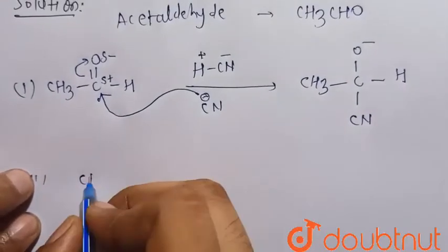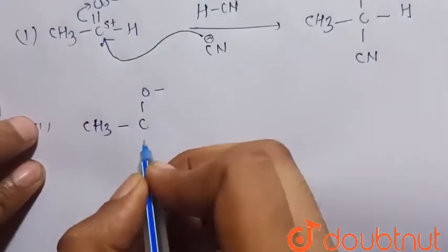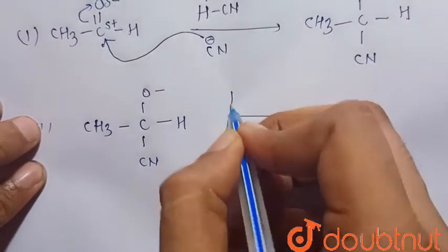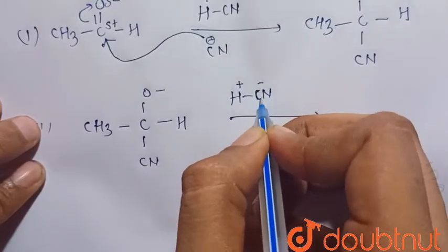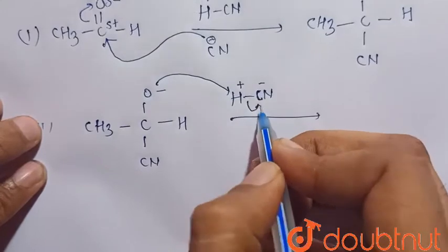Consider this intermediate: CH3CO- CNH. It is again reacted with HCN. So we know that this is H+ and this is CN-. So this will take this hydrogen and this bond breaks in this way.